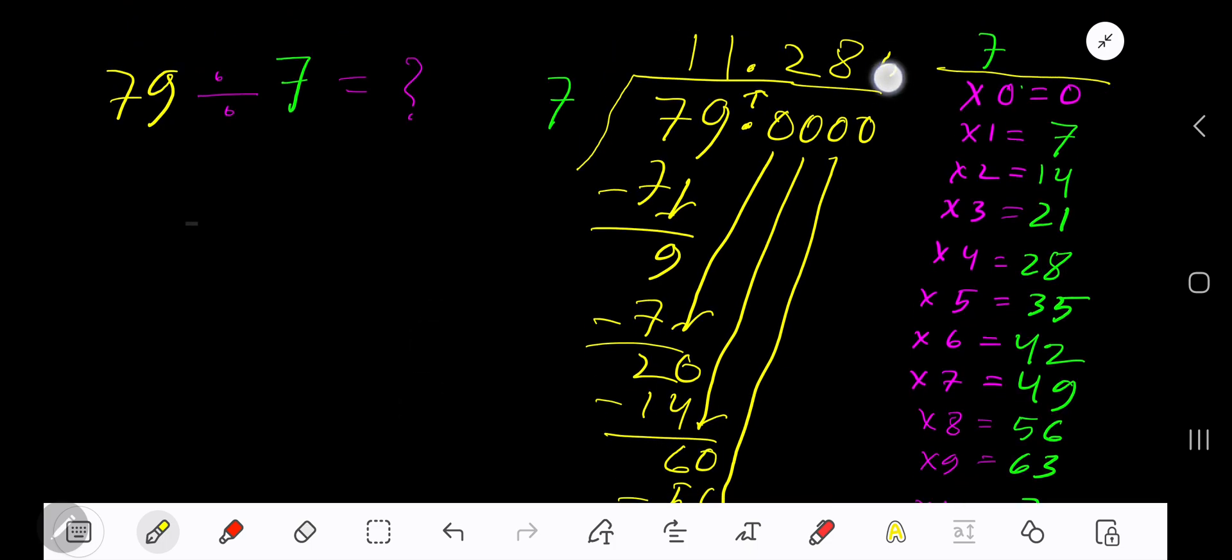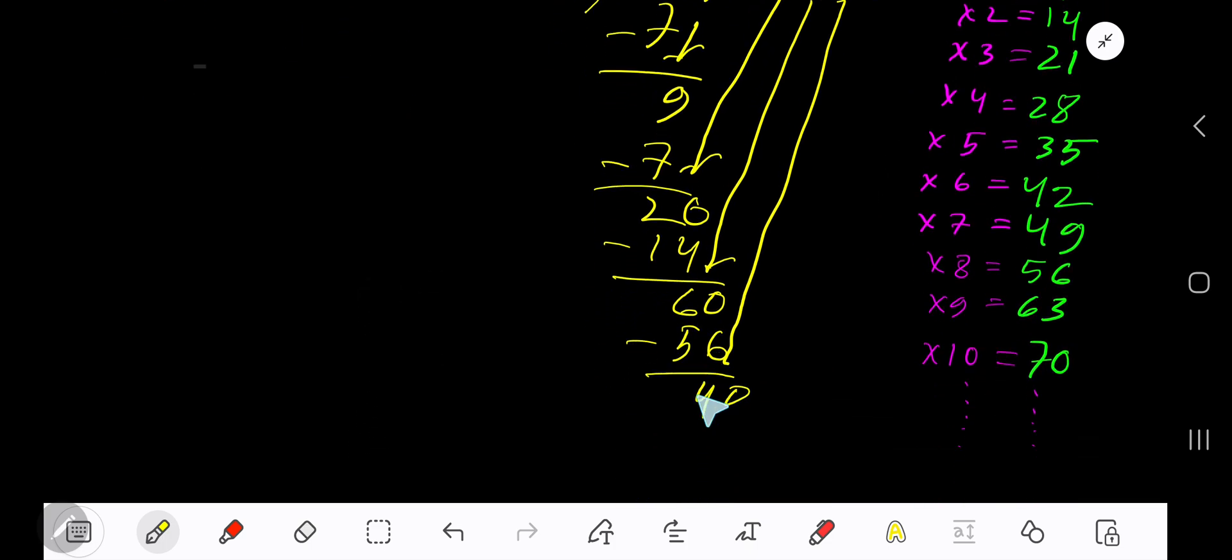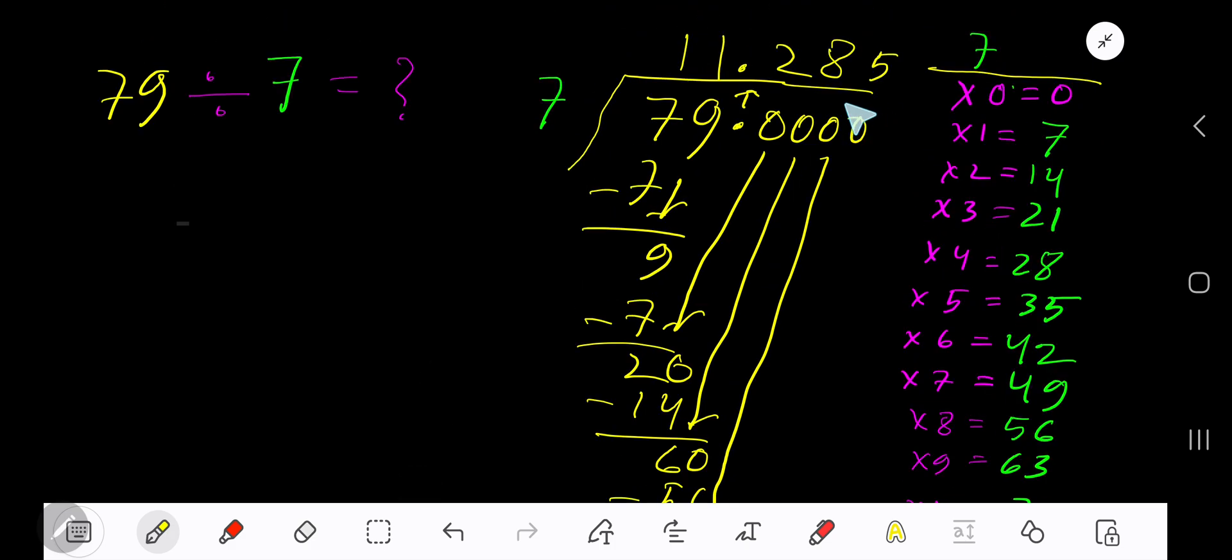5 times 7 is 35. Subtract to get 5. You can bring down more zeros, but since we have three places after the decimal, we'll stop here. So our answer is 11.285.